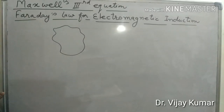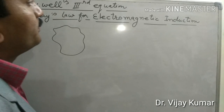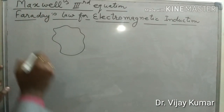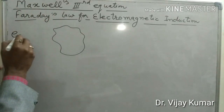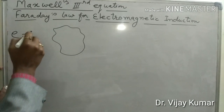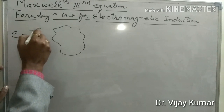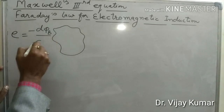The derivation of Maxwell's third law depends upon Faraday's law of electromagnetic induction. According to this law, the induced EMF across a closed circuit is equal to the negative rate of change of magnetic flux.